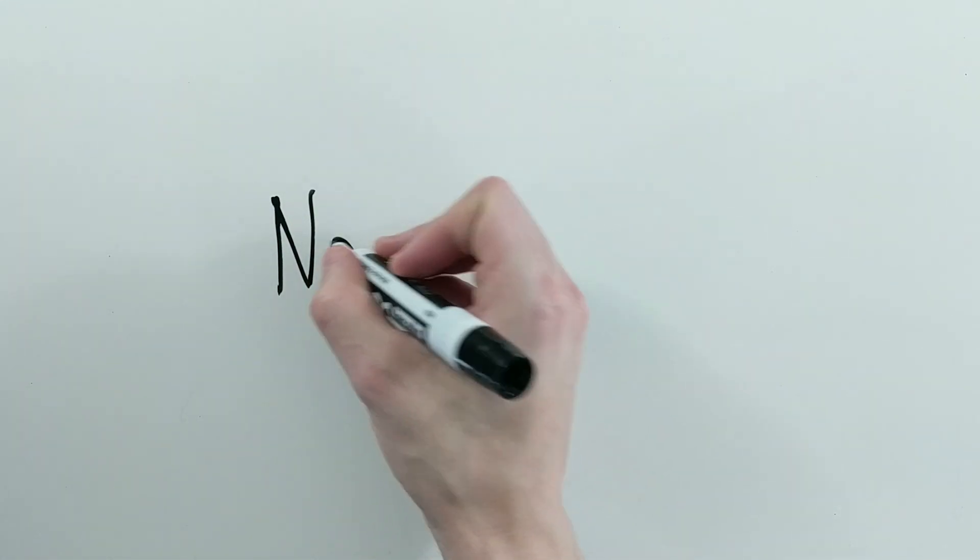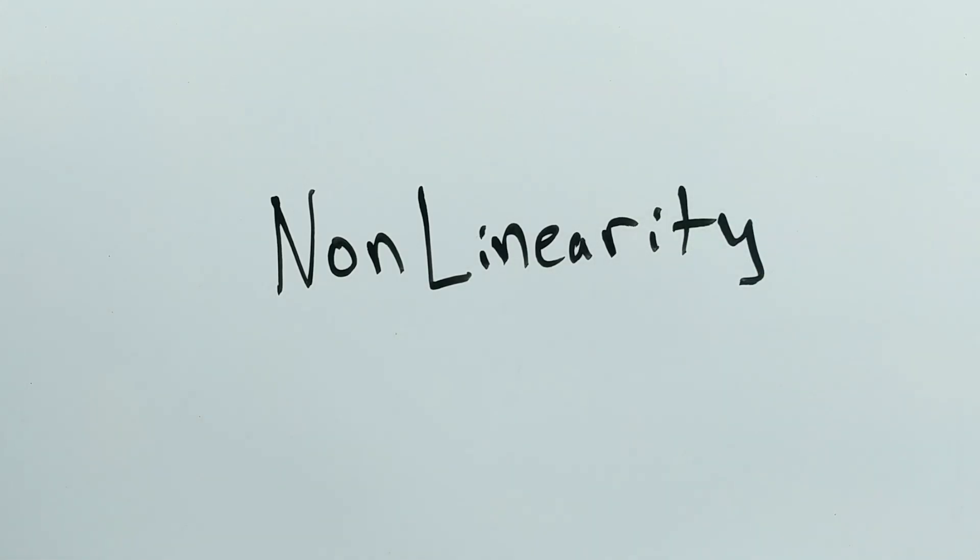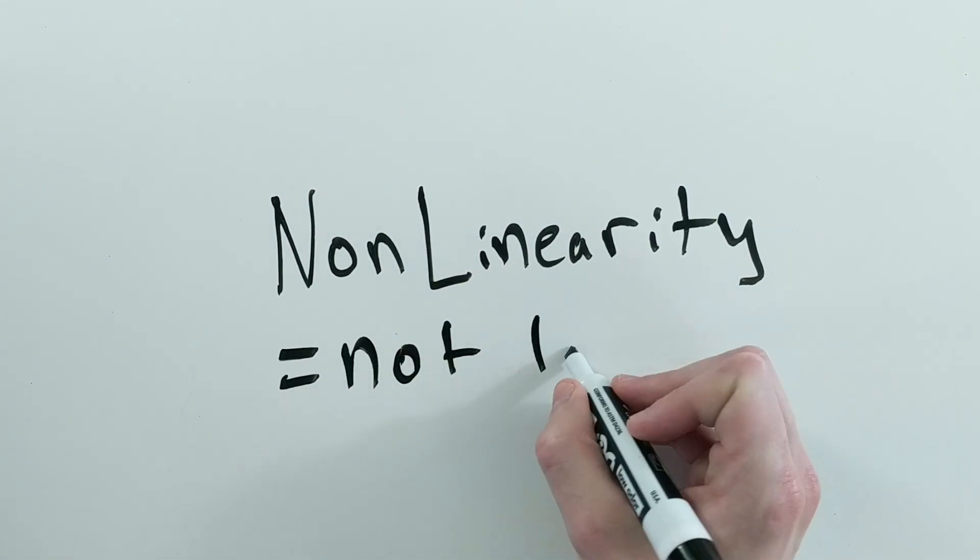When learning about neural networks for the first time, you might hear about the term non-linearity around the time you learn about activation functions. Basically, non-linearity just means not linear.